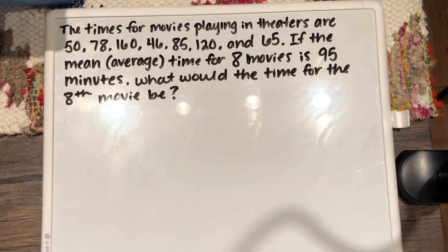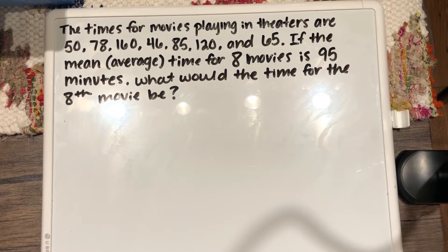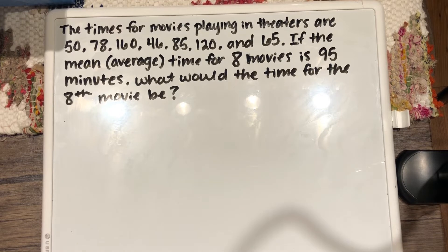So our first example is a word problem. The times for movies playing in theaters are 50 minutes, 78 minutes, 160 minutes, 46 minutes, 85 minutes, 120 minutes, and 65 minutes. That is seven different movies. If the mean or average time for eight movies is 95 minutes, what would the time for the eighth movie be?